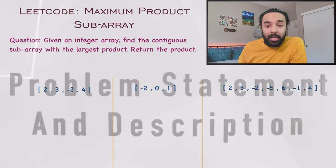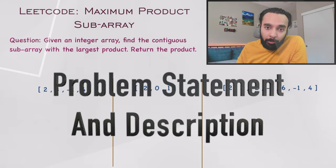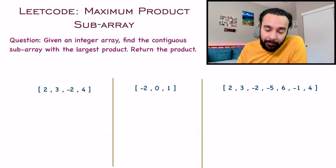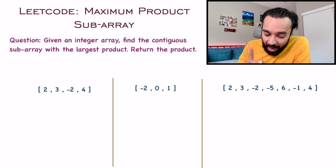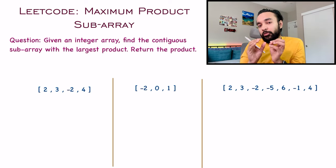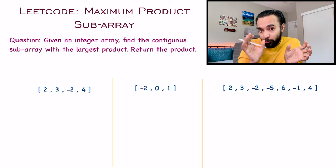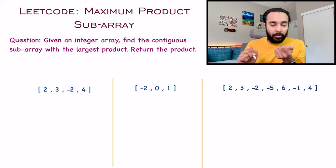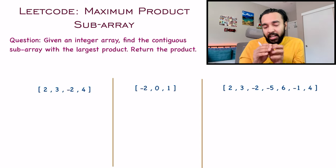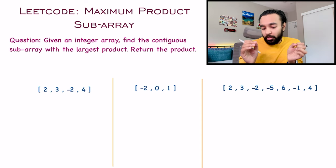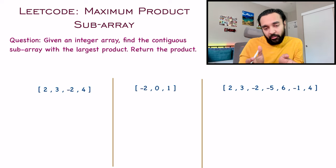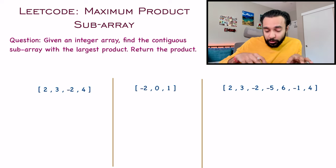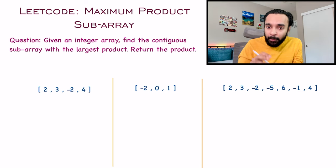First of all, let's make sure that we are understanding the problem statement correctly. In this problem, you are given an integer array and you have to find out the continuous subarray that has the largest product. And once you find it out, you just have to return the product. Pretty straightforward.